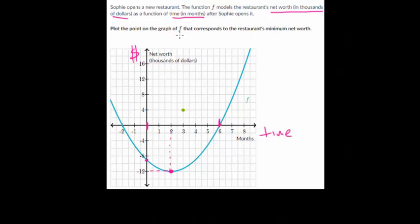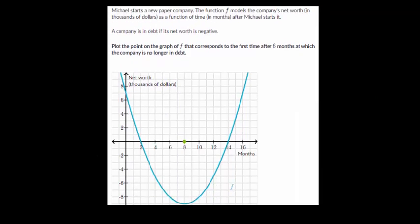Plot the point on the graph of f that corresponds to the restaurant's minimum net worth. Usually when you do this analysis, you're probably going to come across the question and answer it along the way, which we did. The minimum net worth, the bottom of our curve here, was at two months in, and she was at a negative $12,000 loss. So you would drag this green point right here and just plot it right there. That should be the final answer for this one. We'll just keep moving.